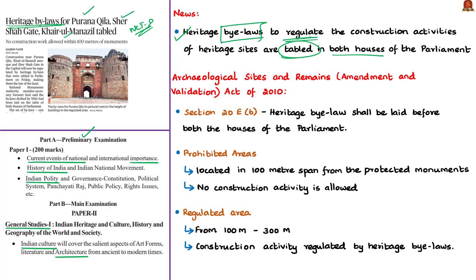In general context, the higher authority can be the legislature — the legislative arm of the government — or a government body such as an organization, authority or institution. In today's context, the higher authority is the legislative arm of the Government of India, which is Parliament. This heritage bylaw shall be laid before both houses of Parliament as per Section 20E Clause 6 of the Archaeological Sites and Remains Amendment and Validation Act of 2010, also called the AMASR Act of 2010. Two sets of heritage bylaws have been drafted under the AMASR Act of 2010.